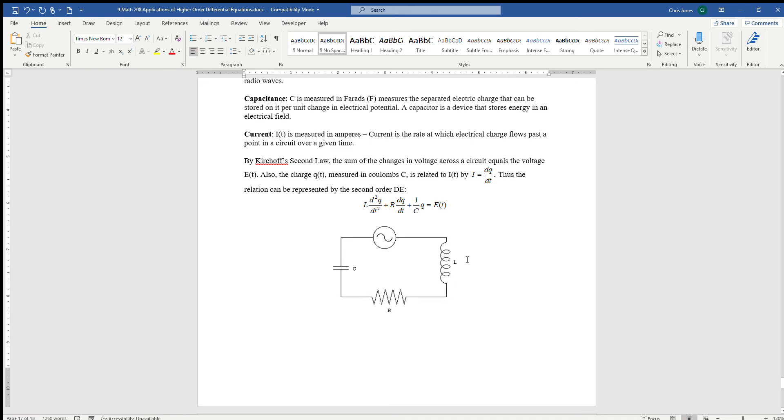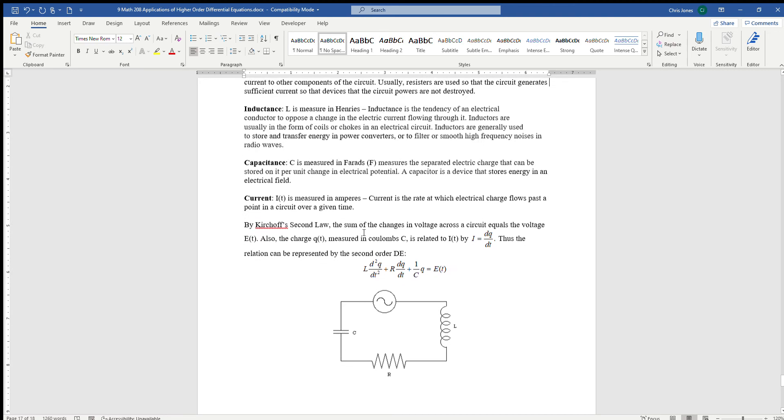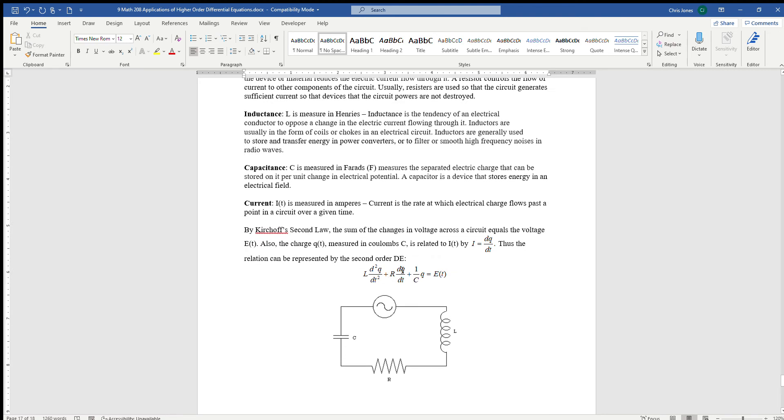Given all that, we can use Kirchhoff's second law. Kirchhoff's second law says that the inductance times the second derivative plus the resistance times the first derivative plus one over the capacitance times Q is equal to the voltage E of T. If we solve that, we get some sort of measure of charge measured in coulombs. Usually we use this relationship I of T, the amount of charge in amps.